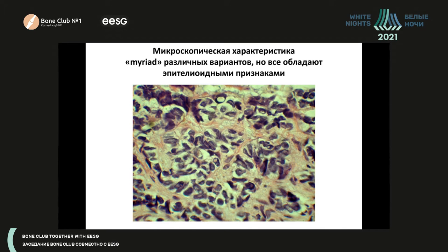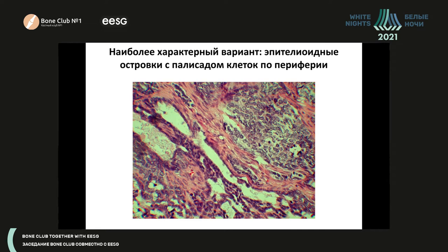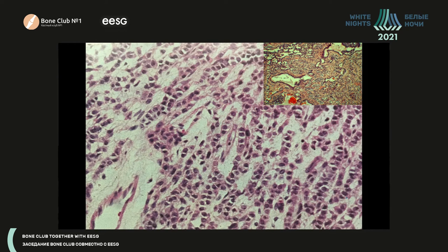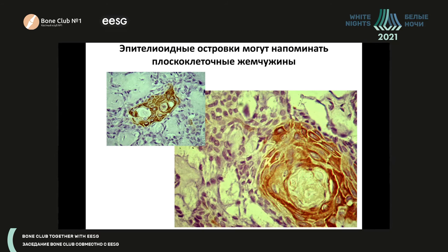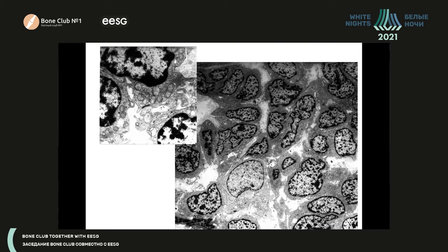Adamantinoma might look in an absolutely diverse way. It might look like spindle cell sarcoma, or it might look like a metastasis. De-differentiated adamantinoma is sometimes called a bone cancer, and sometimes it forms chains that look like a metastatic epithelial tumor. Sometimes it forms squamous cell structures, and quite typical for that — lots of studies were done with electron microscopy.